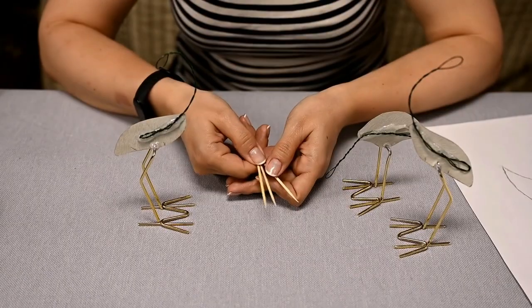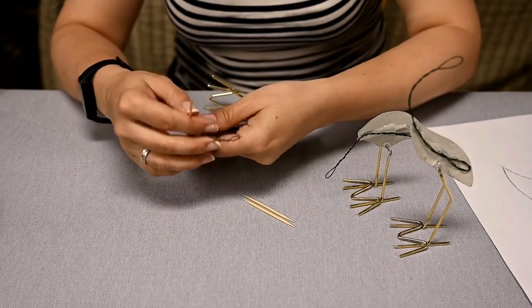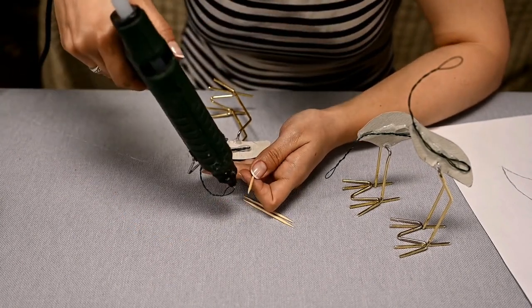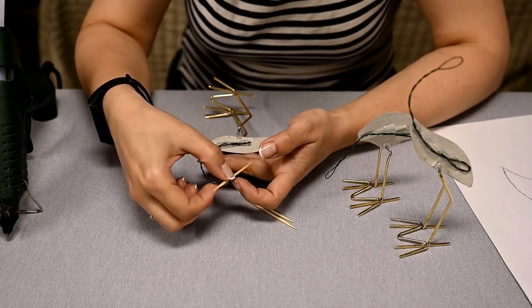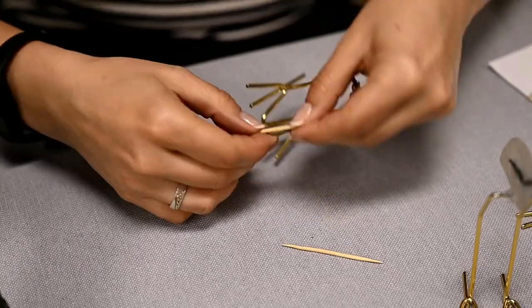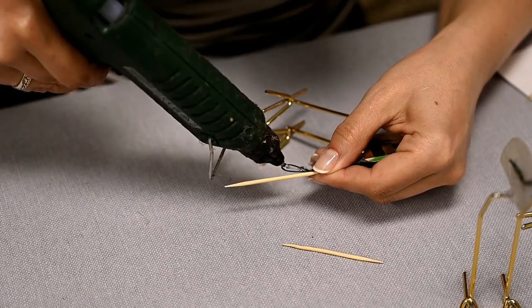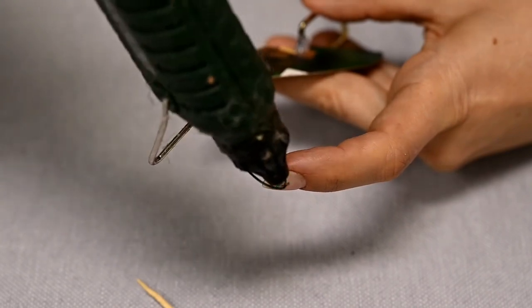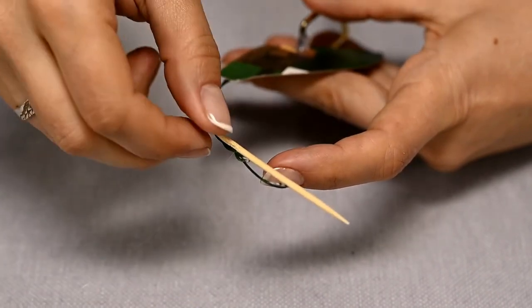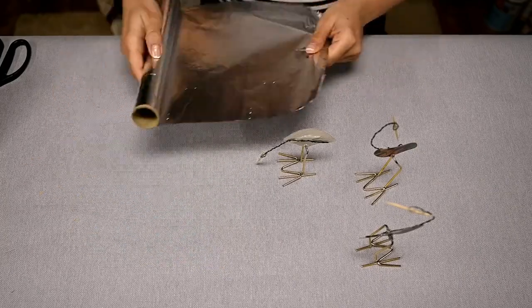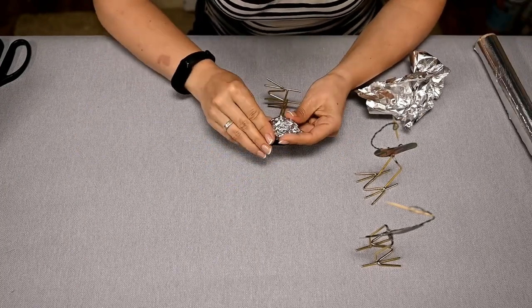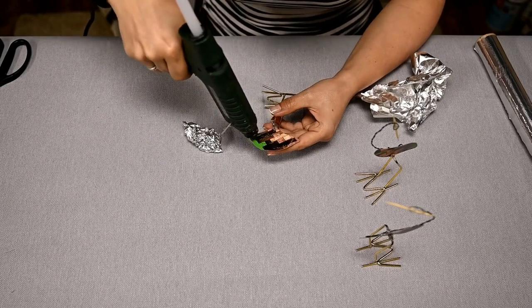The cranes do not yet have beaks. To make them I'll use toothpicks. I'm hot gluing them to the heads and then cutting off the excess with wire cutters.